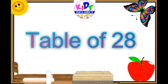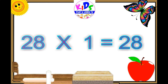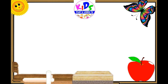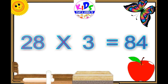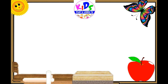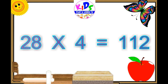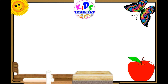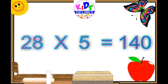Hello everyone. Today we are going to learn table of 28. 28 ones are 28. 28 twos are 56. 28 threes are 84. 28 fours are 112. 28 fives are 140.